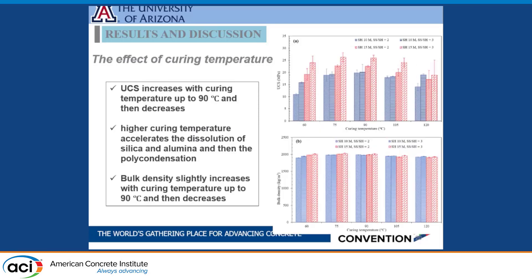We checked the effect of curing temperature on geopolymerization and found that 75 to 90 degrees Celsius curing in the oven gives an optimum UCS.